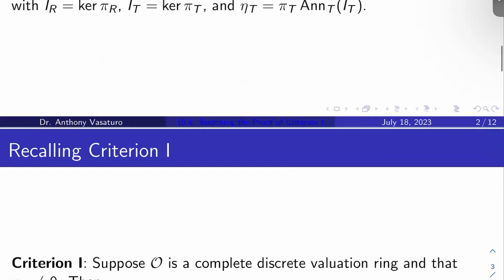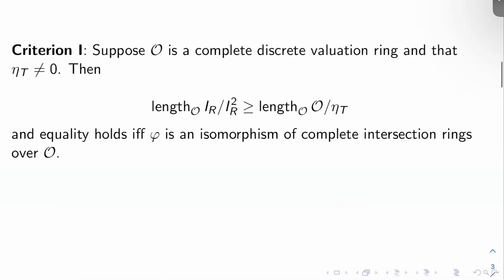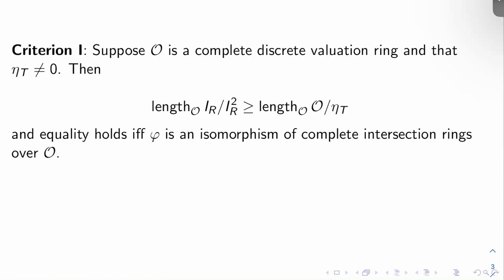Let's recall Criterion 1. Criterion 1 says the following: suppose that O is a complete discrete valuation ring and that eta sub T is nonzero. Then the O-length of I sub R mod I sub R squared is at least the O-length of O mod eta sub T. And equality holds if and only if phi is an isomorphism of complete intersection rings over O.